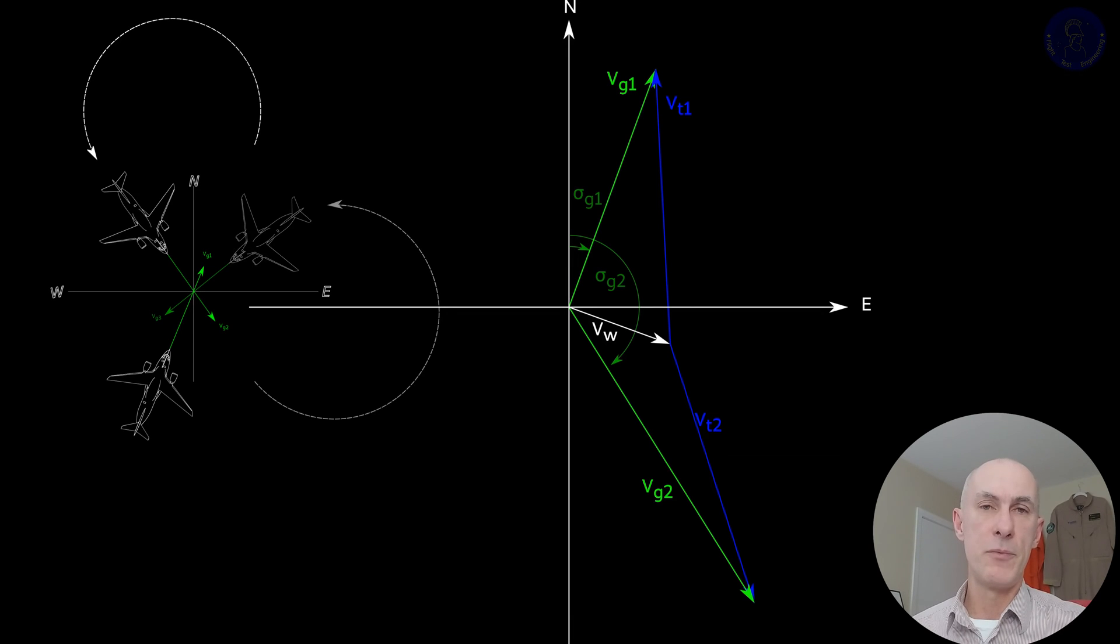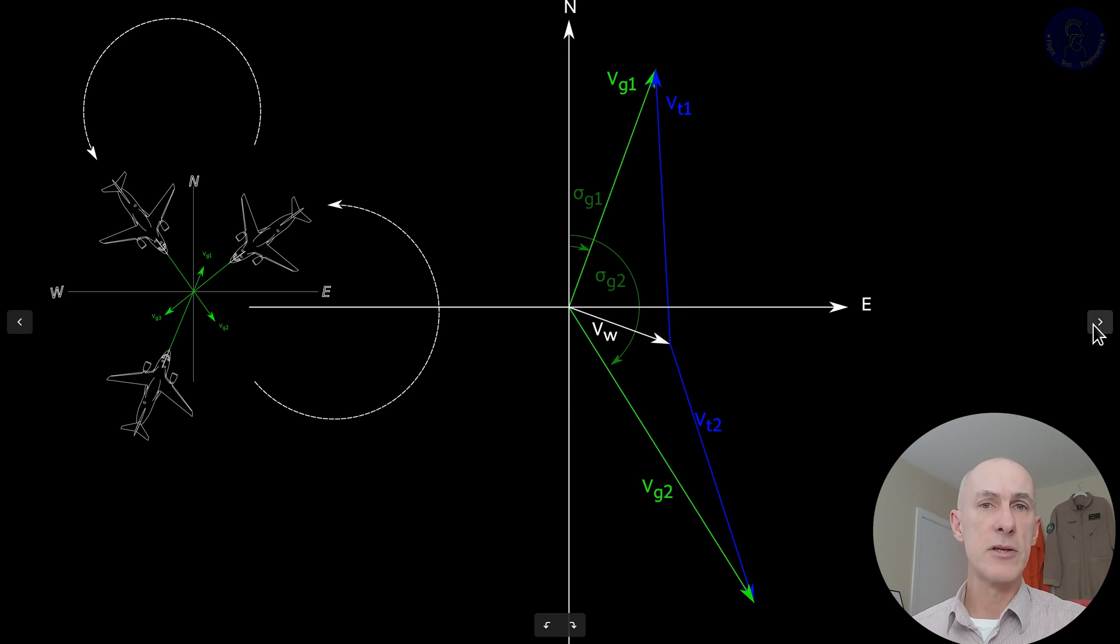And then, you proceed to the third heading. And, just like we did, you just plot it on the same graph again. Starting from the origin, you plot your ground speed here, considering the track that you get from your GPS.